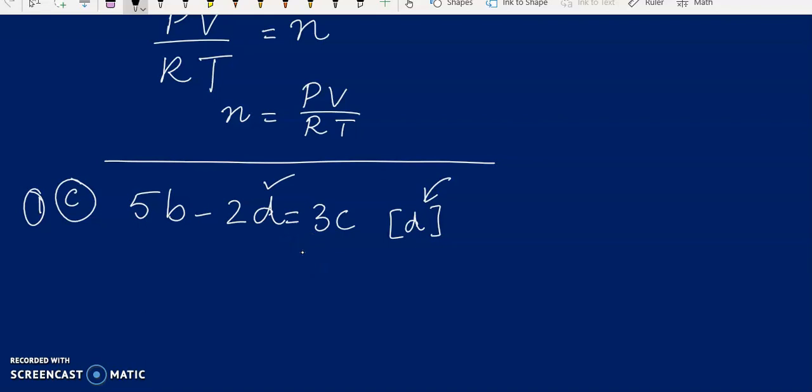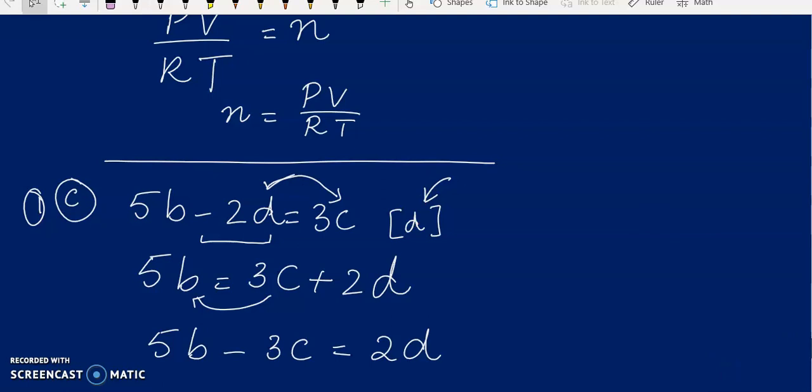So first of all, we will separate D. You can see that with 2D there is a negative sign. Whenever you have this kind of situation where you need to separate D and there is a negative sign with it, you take it to the other side of the equation. When 2D goes to the other side, it will be added on the other side. Now this 3C will go to the other side, right hand side, and it will be subtracted from there. We are left with 2D here.